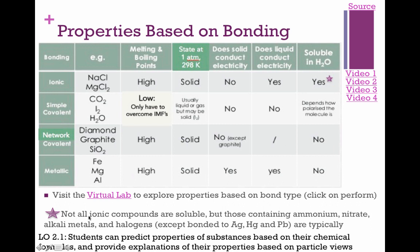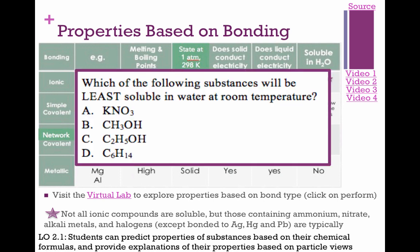Not all ionic compounds are soluble, but remember those four solubility rules: potassium, nitrate, ammonium, and sodium are soluble. This slide shows the different properties — so if I tell you that you have a beaker full of NaCl, you should be able to tell me it has a high melting point because it's ionic. Those are the types of questions with this.